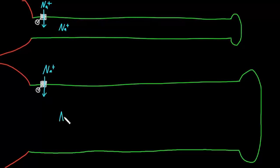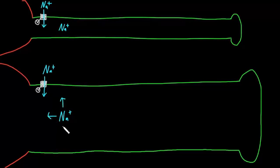Here's our sodium ion in the large diameter axon. Both of these sodium ions, once they're inside the axon, could move in really an infinity of directions — they could go in any direction and any degree of direction, so there's an infinity of pathways these ions could travel.